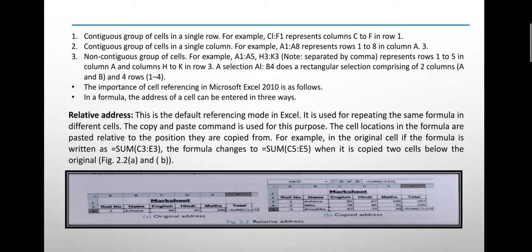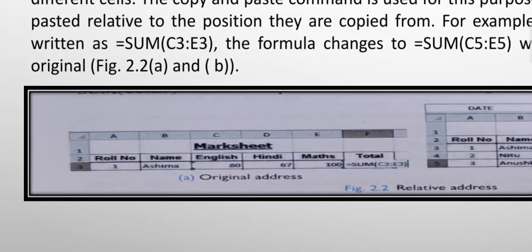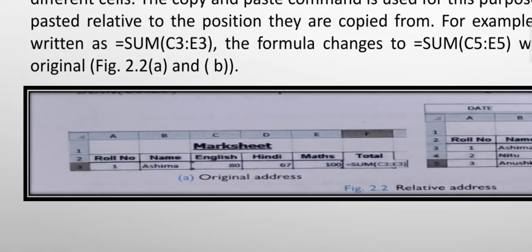For example, the original cell has the formula written as =SUM(C3:E3). The formula changes to =SUM(C5:E5) when it is copied to a cell below the original. Here you can see the copy paste method: roll number, name, English, Hindi, math.